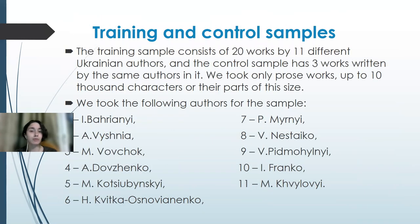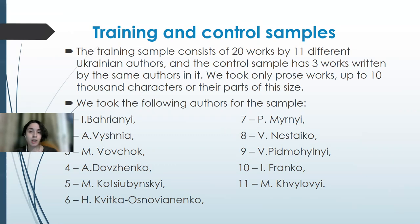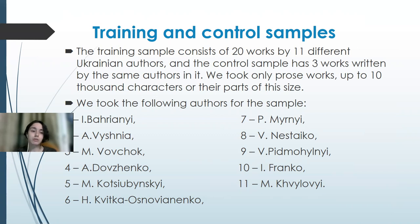Regarding training and control samples: the training sample contains 20 works by 11 different Ukrainian authors. The control sample has 3 works written by the same authors. Only prose works of up to 10,000 characters, or parts of that size, were used. The names of the authors used in our sample are shown on screen.